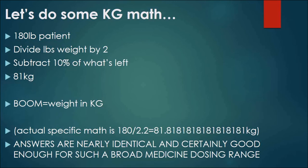Just divide their weight in pounds by two and subtract 10 percent of what's left. So you take 180 divided by two, you get 90. Take away nine, you got 81 kilos there. That's your weight in kilos. It's just that fast. You can do it in your head. You don't need a calculator. Now the actual specific math is down there at the bottom: 180 divided by 2.2 is 81.81 kilos. So this is definitely a calculation that is close enough for a drug with a therapeutic range as broad as what we're using it for.